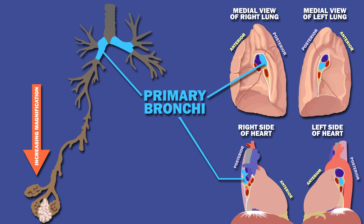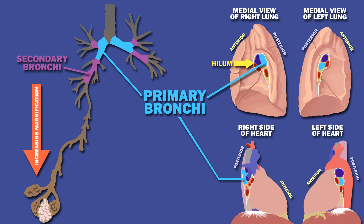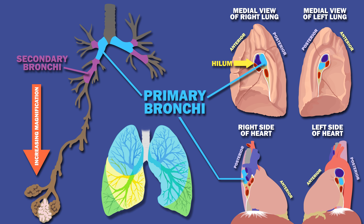The main, or primary, bronchi enter the lungs at the hilum, which is the area on the mediastinal surface of the lung through which structures enter and leave the lung. These primary bronchi branch into lobar or secondary bronchi, which supply air to each lobe of the lungs.